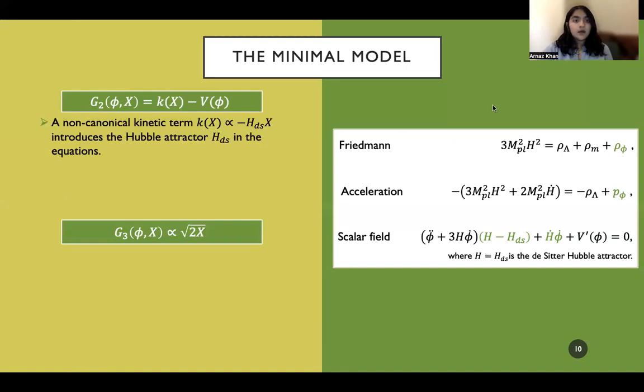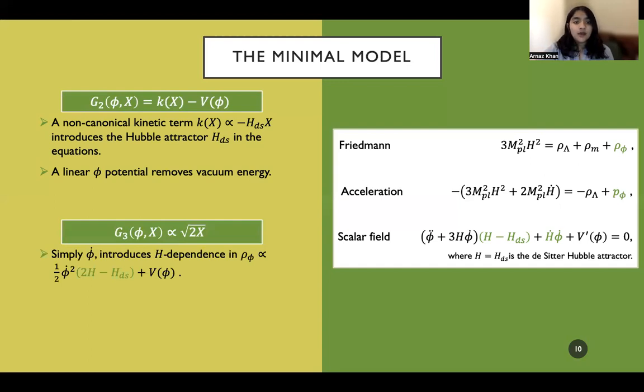So k here is a non-canonical kinetic term as mentioned, but what it mainly does is introduces the attractor term into our equations of motion. And despite its negative sign, it is free of ghosts. Our potential is a linear potential that simply removes or cancels vacuum energy. This g3 term introduces h-dependence, as you can see here in the scalar field equation. And it introduces an h-dependence even in the density term. This is what actually allows the self-tuning to occur.